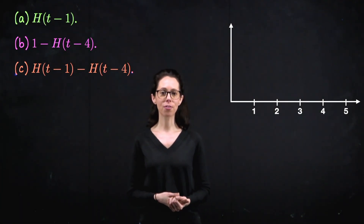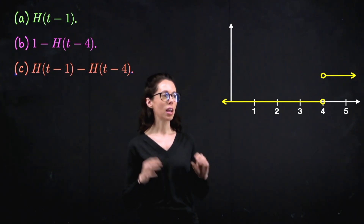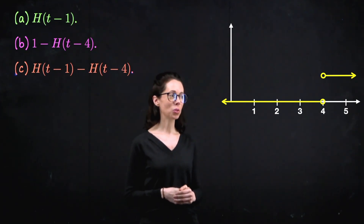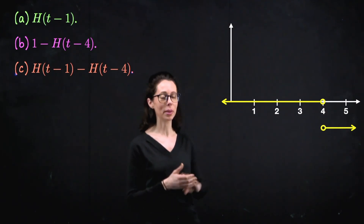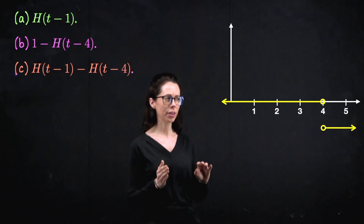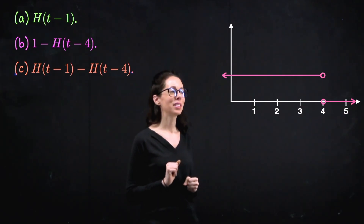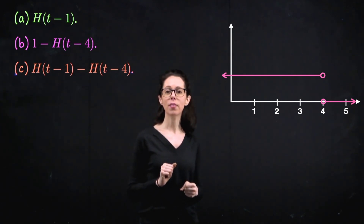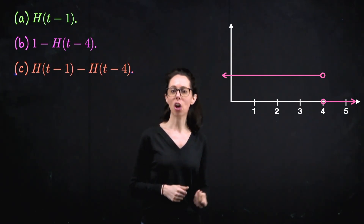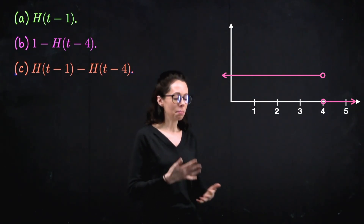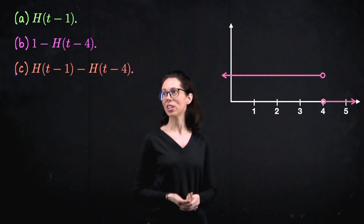So h of t minus four — just like version a — is your standard Heaviside function but shifted four units to the right, a switch which gets turned on at t equals four. Then we negate it, which takes what's positive one and flips it down to negative one, giving zero switching to negative one. But then we translate up by one — that's the leading one in the expression. So our graph transformations overall give us a function which starts off at one and then drops down to zero when time equals four. This would be like a signal that turns off when time equals four.